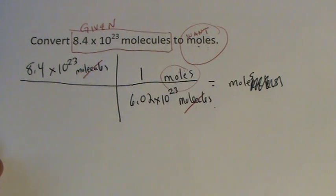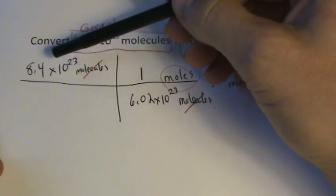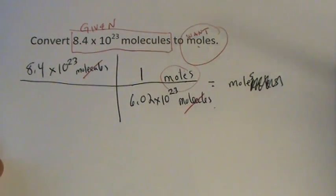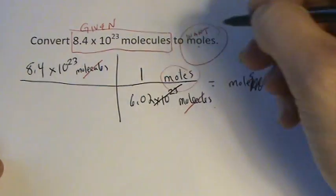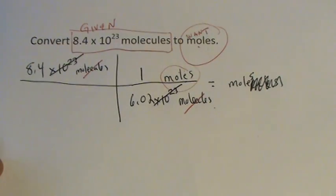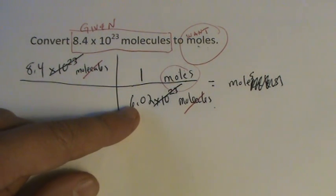Well, now you have to figure out how you're going to divide 8.4 times 10 to the 23rd times 1 by this. What's kind of nice is you can also cancel out the 10 to the 23rd, since it's the same on the top and the bottom there. So you're really only dividing 8.4 by 6.02.